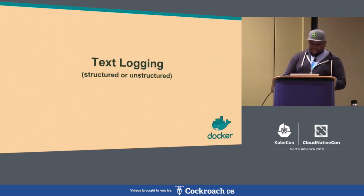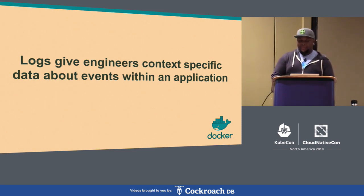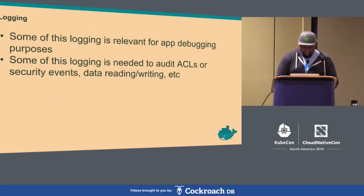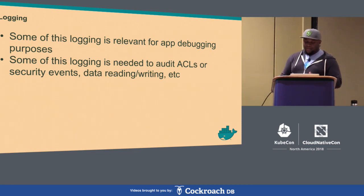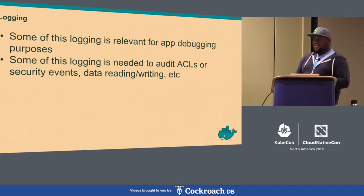Then we have text logging — distributed logging in this case, whether structured or unstructured. Logs give engineers more fine-grained, context-specific information about events within an application. If you're trying to debug a problem, you may get an alert from Prometheus and then look through your logs to figure out what's wrong. Some logs are relevant for debugging, but some are also required for audit purposes — if you're facing compliance, you may have to audit access, certain transactions, or database reads.